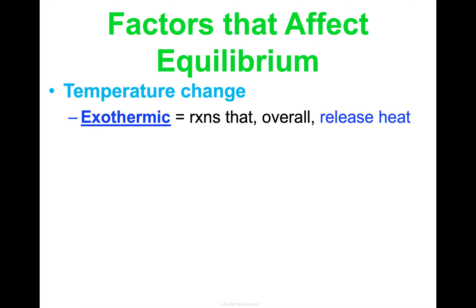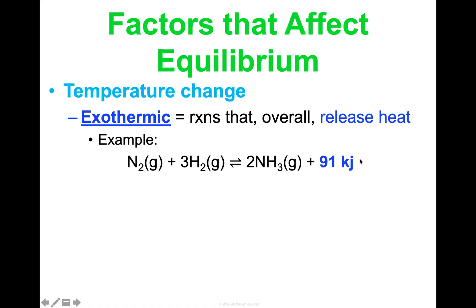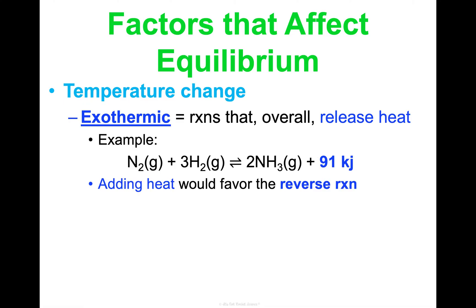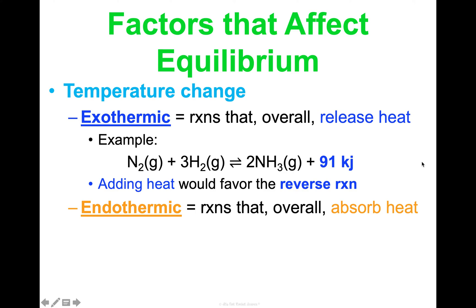Another factor is a temperature change. We'll cover this more in Unit 10 Thermochemistry, but two definitions to introduce now: exothermic and endothermic reactions. An exothermic reaction overall releases energy, specifically in the form of heat — you'll see heat as a product in the reaction, sometimes written as 'plus heat' or in kilojoule units. If we're adding heat to an exothermic reaction, it would favor the reverse reaction. If we lower the temperature, it would favor the forward reaction.